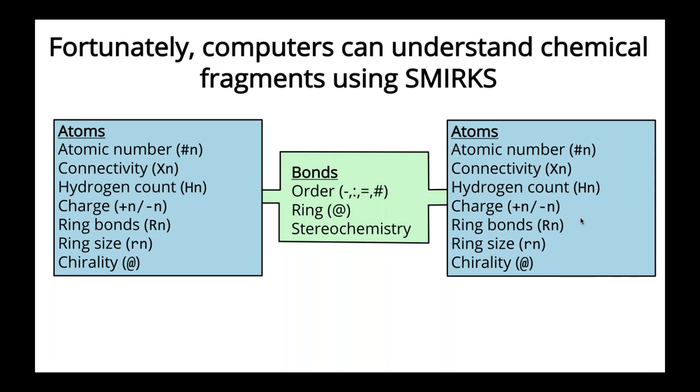So the first thing we needed was a language that would allow our computers to know chemical fragments. So luckily that already exists in the form of SMIRKS or SMARTS strings created by Daylight quite a while ago. So this language is used to describe chemical fragments in a way similar to SMILES strings, which we might be more familiar with, by describing atoms connected by bonds, but allows you to use more specific decorators than what you can on a SMILES string.